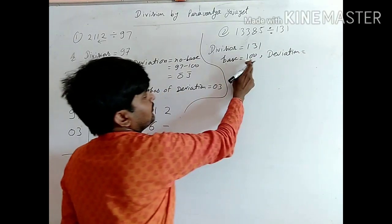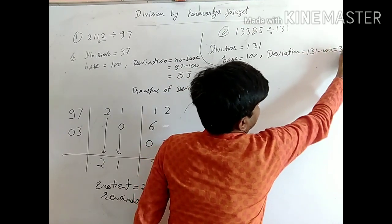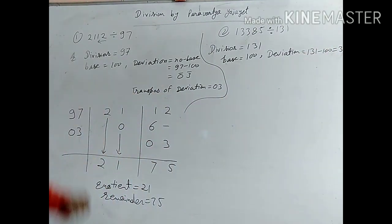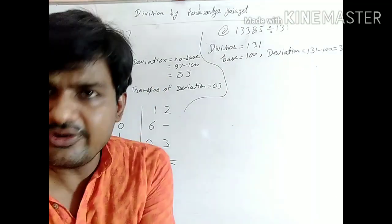Deviation is number minus base. So 131 minus 100, we get 31. So next step, transpose of deviation.